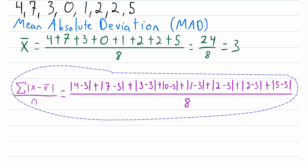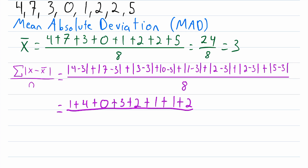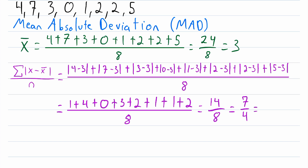Now let's finish the calculation. This equals the absolute value of 4 minus 3, which is 1, plus the absolute value of 7 minus 3, which is 4, plus the absolute value of 3 minus 3, which is 0, plus the absolute value of 5 minus 3, which is 2 — and so on for the remaining data points — all divided by 8. Adding up all the numbers in the numerator gives us 14, divided by 8. Simplifying by a factor of 2 gives us a final answer of 7/4, or 1.75.